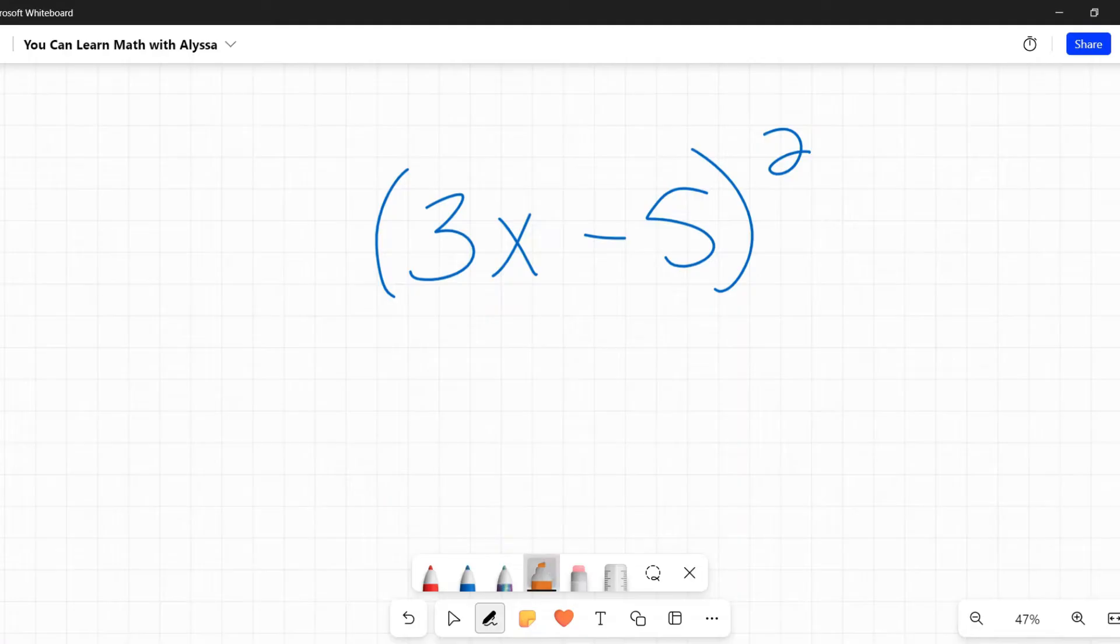We're going to use that same pattern. We're going to take our first term, which is 3x, and square it. Be careful with this. This does not mean 3 times x squared. This means 3x times 3x. So 3 times 3 gives us 9, x times x gives us x squared.